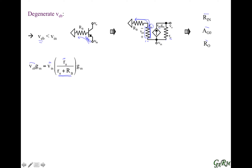We're going to do a translation: instead of looking at the gm current with respect to the emitter-base voltage, we look at the gm current with respect to the input voltage. This entire term we define as gm prime, which is essentially the voltage-divided fraction of gm. That's because we're degenerating with a base-degenerating resistance.